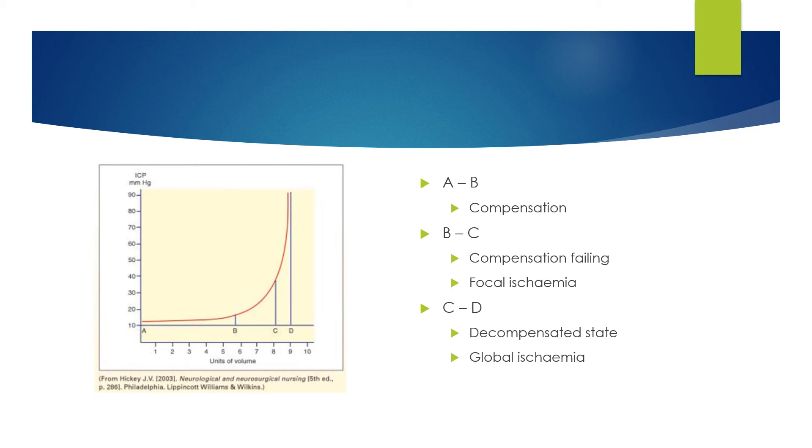Looking at this in graphical form, between points A and B on the graph, as the units of volume within the head increase, the ICP varies very little. The brain is able to compensate very well here.